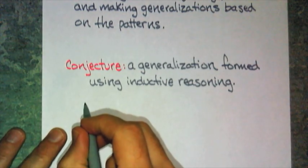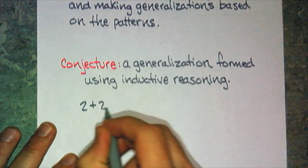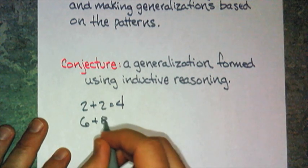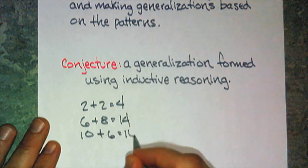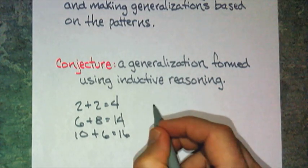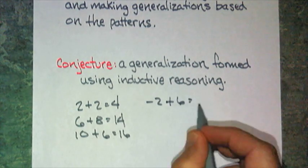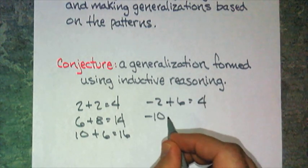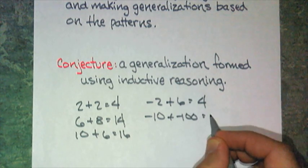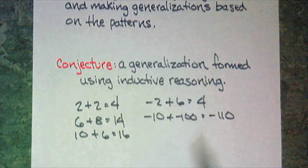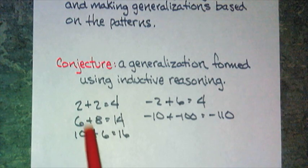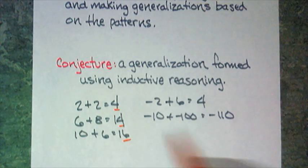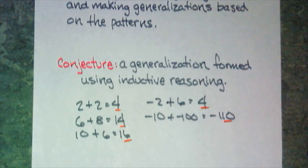So, if I do something like, if I say 2 plus 2 equals 4, if I say 6 plus 8 equals 14, and maybe 10 plus 6 equals 16, you're thinking, well, nothing big deal. What if I change it to negative 2 plus 6, and I get 4, or negative 10 plus negative 100 equals negative 110? So, what pattern am I showing here? Think about it. What did I use? Well, I used integers, yes. I summed them together, and what always happened? That they came out to be another integer, and that integer happened to be even.